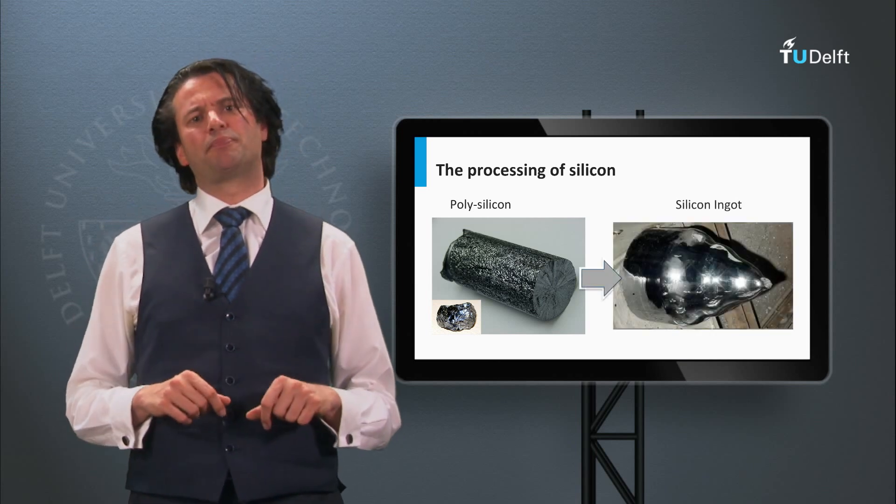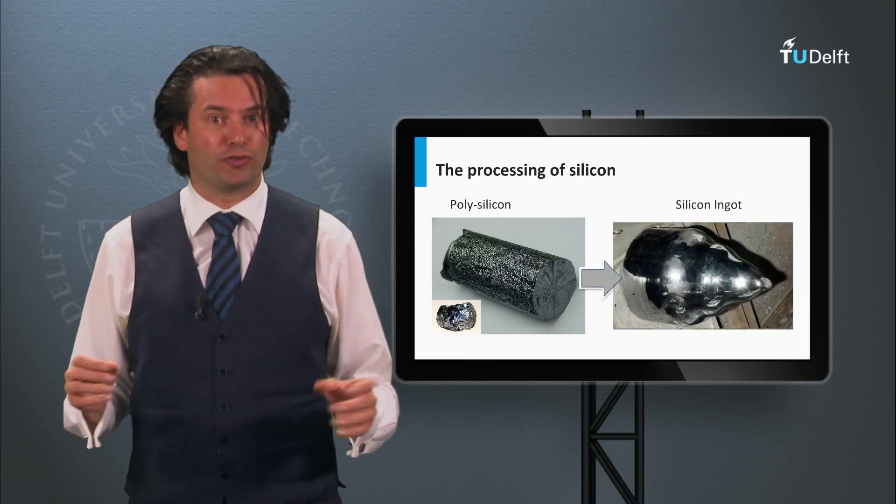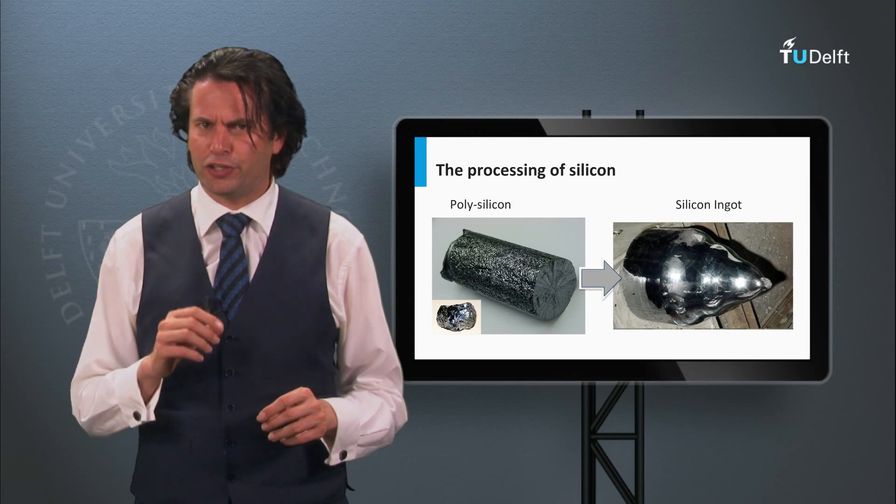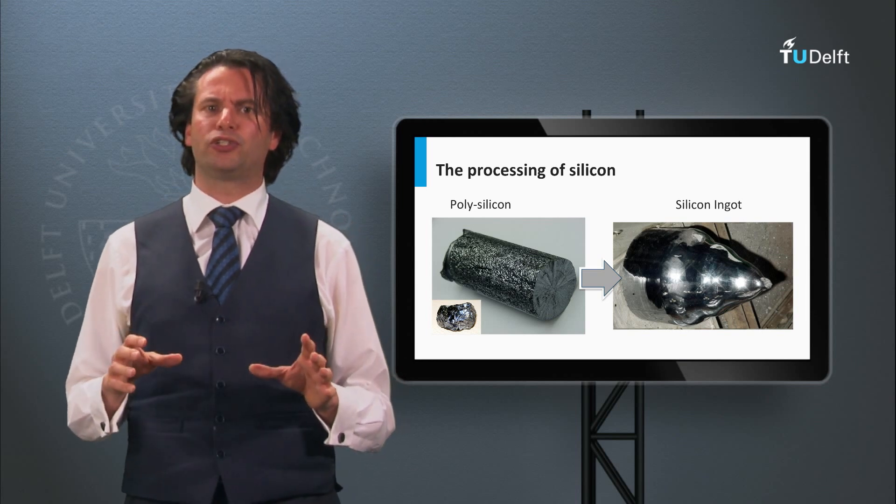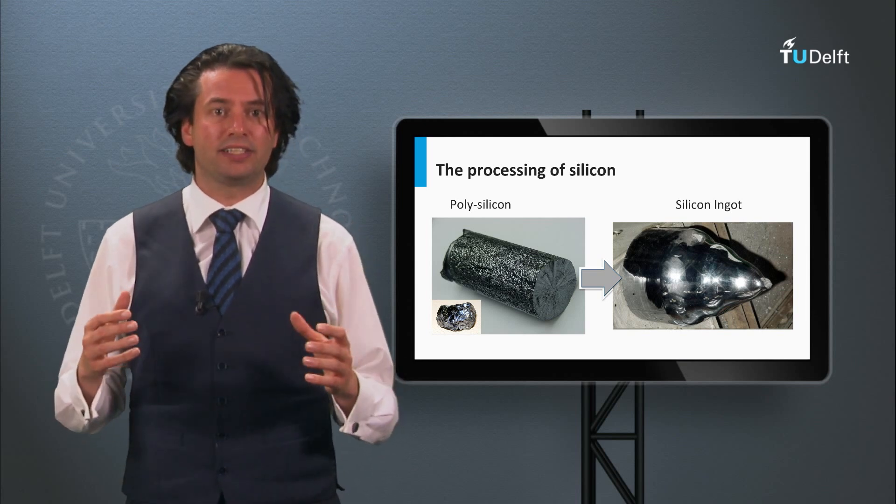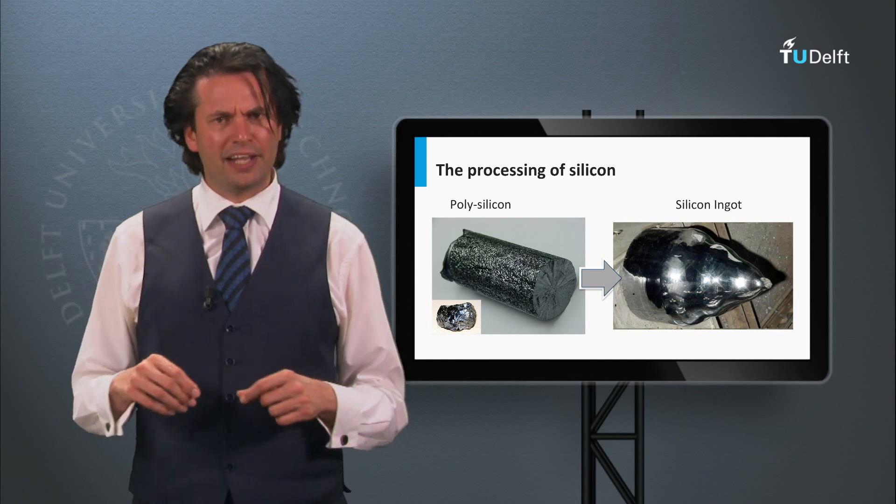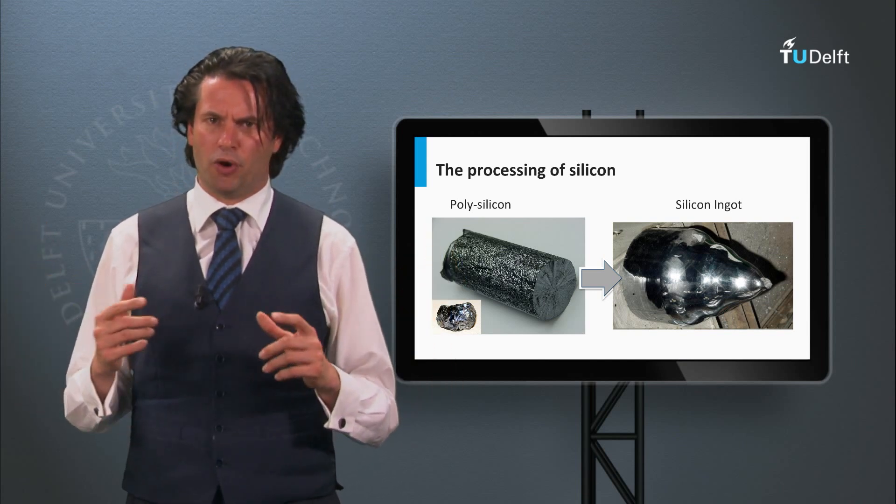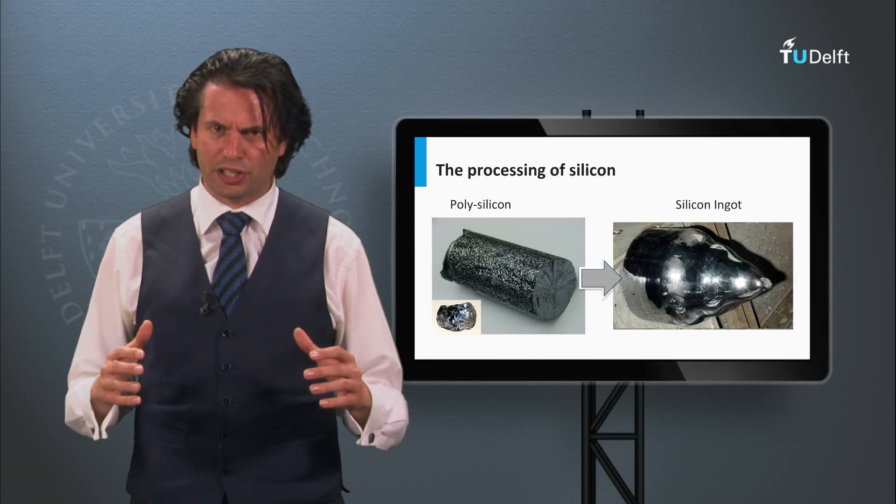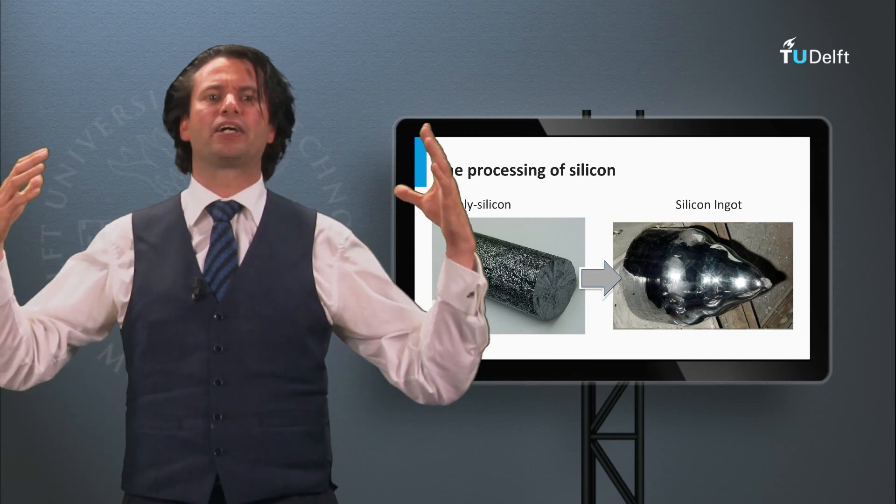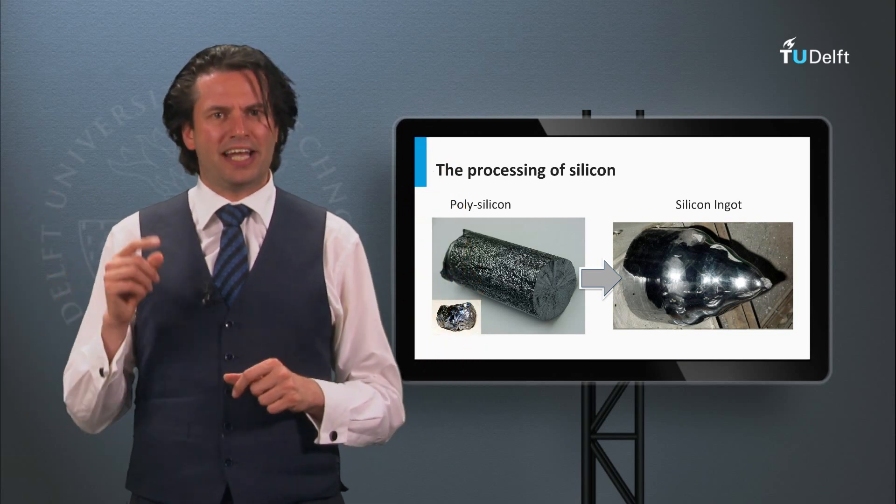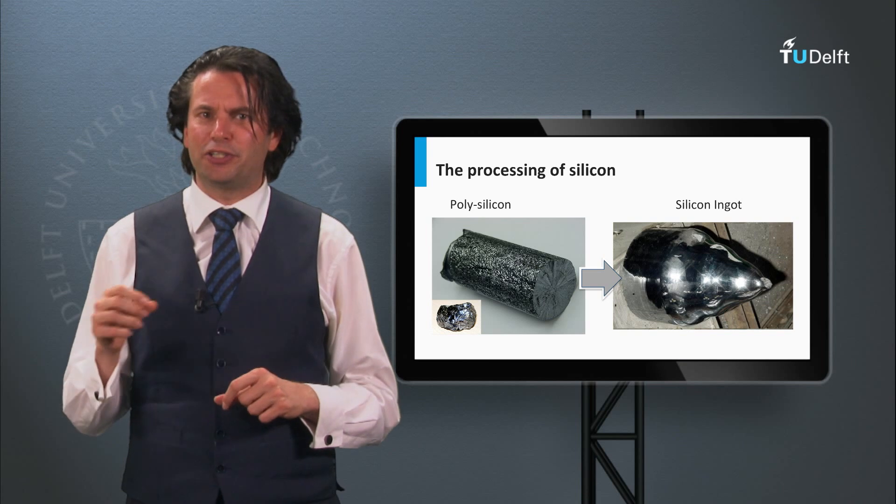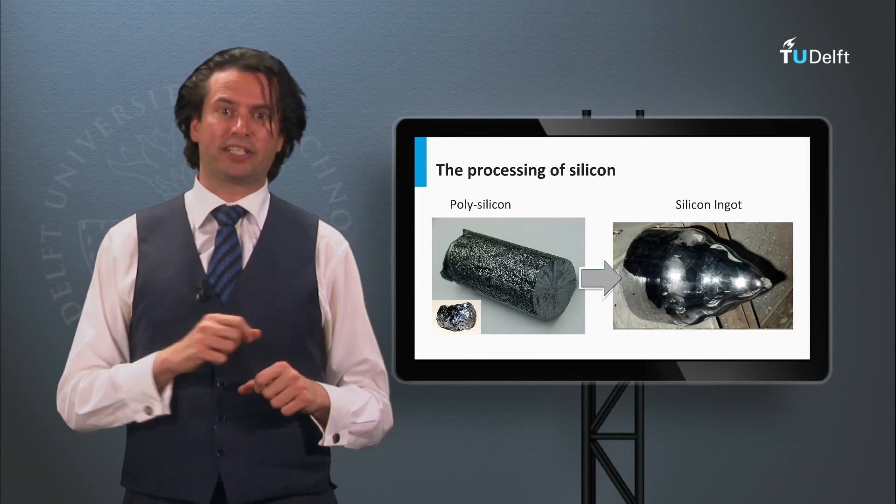The next step is making wafers out of the polysilicon. But first we consider two methods to make monocrystalline silicon ingots. Ingots are large blocks of crystalline silicon. The monocrystalline ingots are solids that consist of one big crystal. In the next animation you will be introduced to the Czochralski processing method.